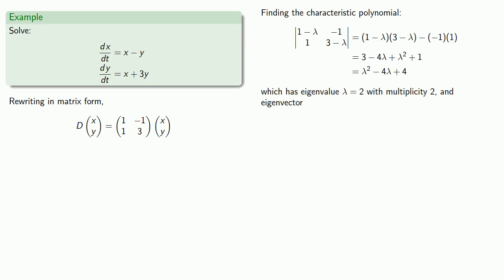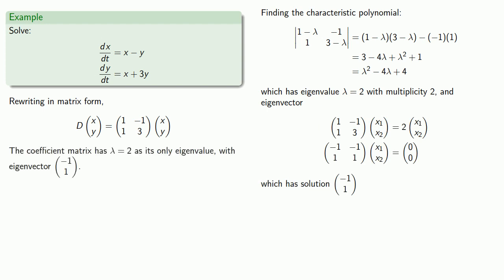And eigenvector. And that gives us a general solution that includes c1e to power 2t times the vector minus 1, 1. But we should have a second constant.